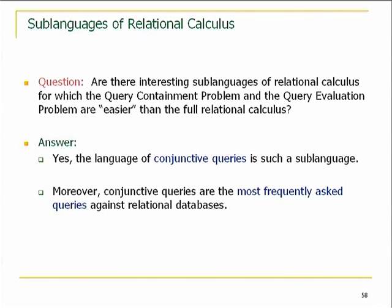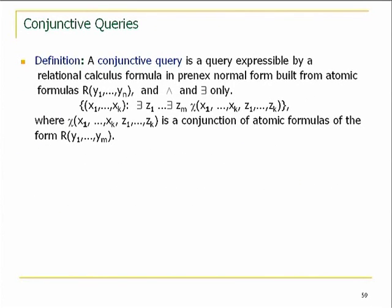Query equivalence is something you would care about because someone gives you two queries and you want to test whether or not they do the same thing. This motivates the question: are there fragments of relational calculus — fragments of first-order logic — for which containment, equivalence, and evaluation are easier than the full case? There is a very nice language: the language of conjunctive queries. The advantage in focusing on this class is that they capture the most frequently asked queries against real database systems.